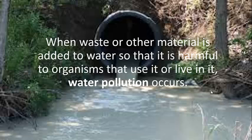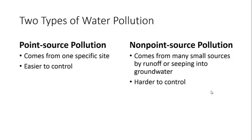Unfortunately, when waste or other material is added to water so that it is harmful to other organisms that use it or live in it, water pollution occurs. There are two types of water pollution: point source pollution and non-point source pollution. By the end of this lesson, you need to be able to tell the difference between point source pollution and non-point source pollution.